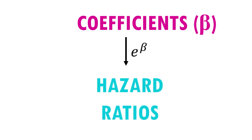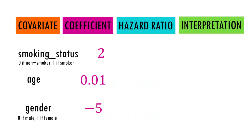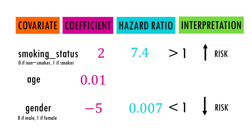To make it easier to interpret, we can remove the logarithm by taking the exponential, and then we get the hazard ratio. The hazard ratio is the exponentiated form of the coefficient, and it quantifies the relative change in the hazard of the event for one unit change in the covariate. A hazard ratio greater than one indicates an increased hazard, a hazard ratio lower than one indicates a decreased hazard, and if the hazard ratio is around one, it indicates no big change in the hazard.